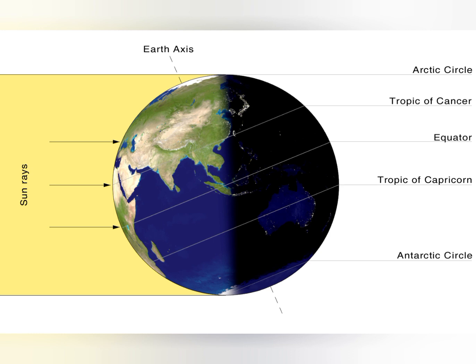The tilt also determines whether a region receives direct or slanting rays of the sun. When the north pole is tilted towards the direction of the sun, it is summer for the northern hemisphere — the places north of the equator — as the sun's rays strike the earth at right angles.